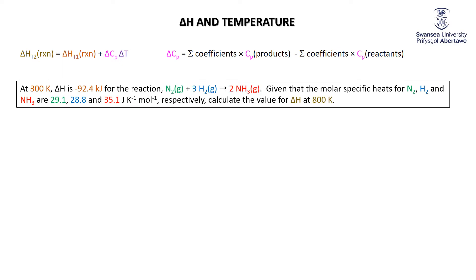Minus 92.4 kilojoules for this reaction: N2 plus 3H2 goes to 2NH3. Now I'm giving you the molar specific heats for N2, H2, and NH3. Calculate the value for delta H at 800 Kelvin. Well, first of all, let's calculate what the delta CP is.